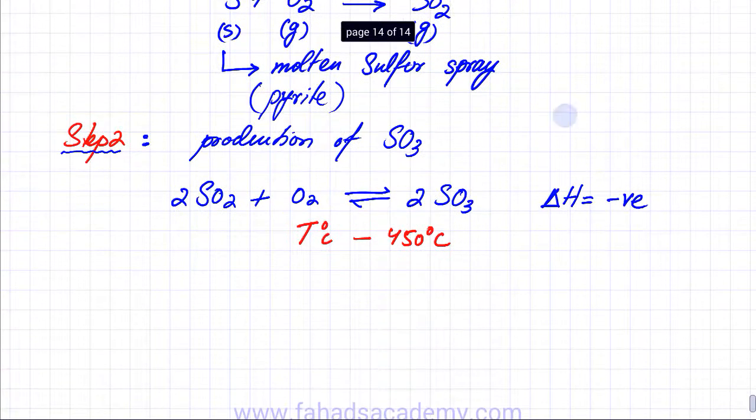We use a certain amount of pressure. The pressure in this case is not that high, around 1-3 atmospheres. We're not using higher pressure because we get a reasonable yield at 1-3 atmospheres.